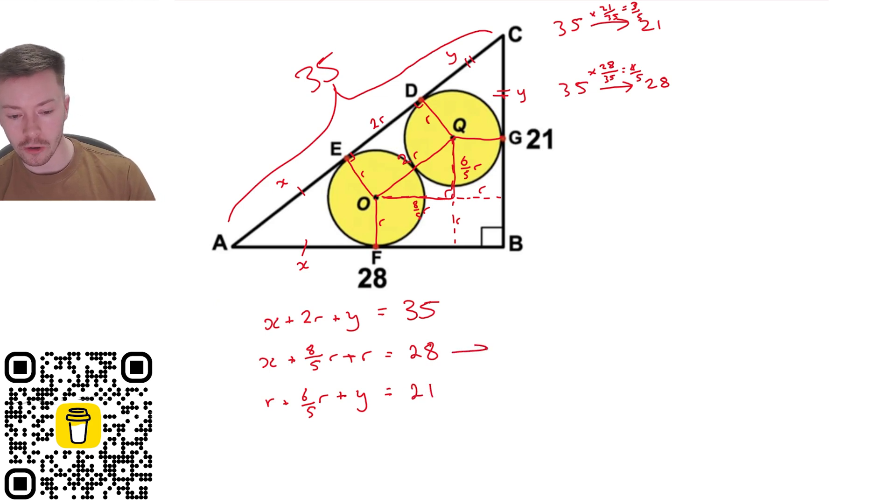Right now I'm going to simplify these second two equations so that's going to give me x plus 8 fifths r plus 1r is going to give me 8 out of 5 is 13 over 5r is equal to 28 and then for the second one I'm going to have 1r plus six fifths r so that will give me 5 out of 6 is 11 over 5r plus y is equal to 21.